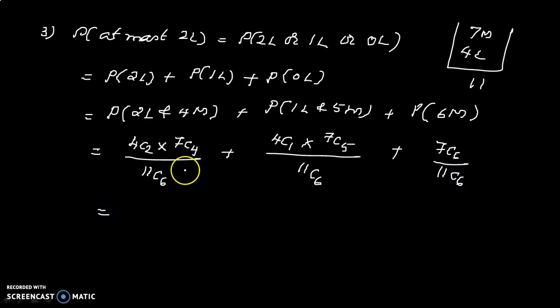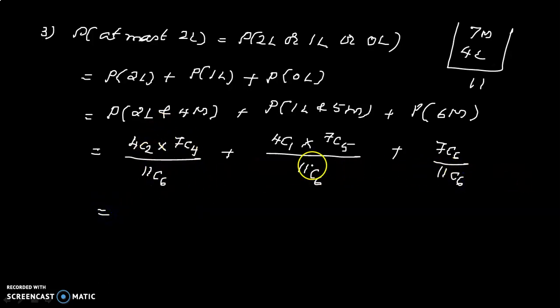Calculating the three terms, the final answer for the probability of at most two ladies is 0.645.